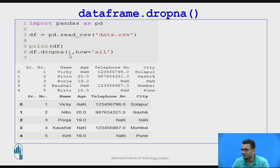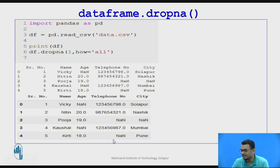When the parameter is axis=1 and we keep how='all', it prints all the data irrespective of whether any data is missing or not.